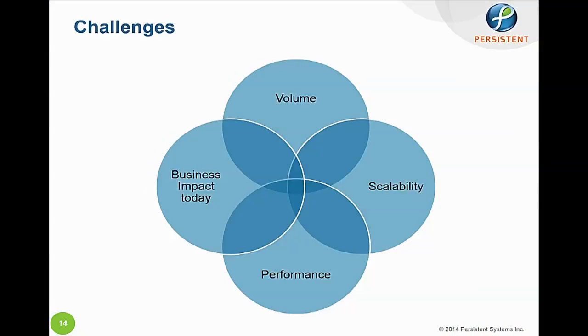What are the challenges? A simple Venn diagram: volume, scalability, performance, and business impact today. You have to worry about the volume of data — we have a reference architecture that will alleviate that. There are scalability issues worth bringing up in the community. Most importantly, what's your business impact today? If turning it on impacts your revenue, then don't turn it on. You have to make smart business decisions about how much risk you're willing to take today to gain benefit in the future.